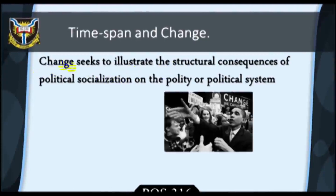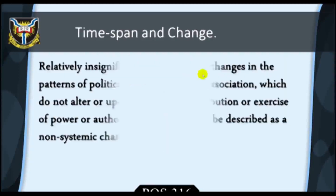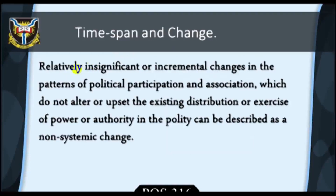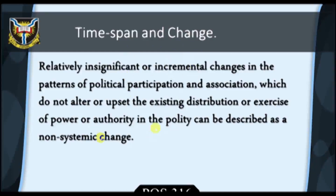The final analytical category, change, seeks to illustrate the structural consequences of Political Socialization and the quality of the political system. Political change refers to a fundamental or far-reaching transformation in the distribution or exercise of authority in the political system. On the other hand, relatively insignificant or incremental changes in the patterns of political participation and association, which do not upset the existing distribution or exercise of power or authority in the polity, can be described as non-systemic change. Generally speaking, Political Socialization is a stabilizing process and hardly produces sudden or systemic change. The process of socialization becomes destabilizing or produces systemic change only under conditions of rapid modernization, transformation, or general societal crisis.